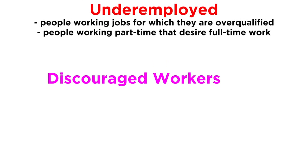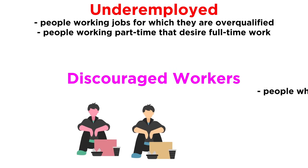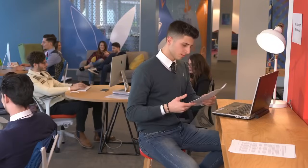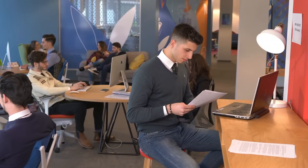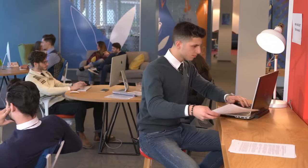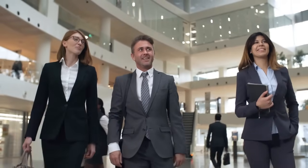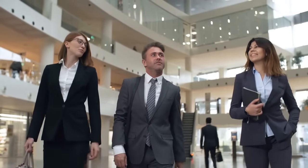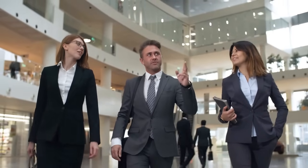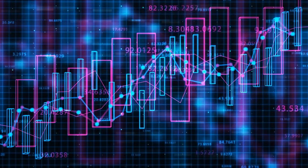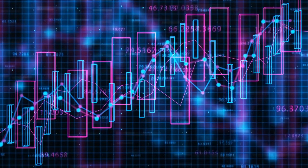They are what economists refer to as underemployed, or working at a job for which they are overqualified, or working part-time when they desire full-time work. There are also discouraged workers who have stopped searching for employment altogether. Due to these situations, the unemployment rate can be misleading. But one thing is certain: economists greatly rely on tracking unemployment, as it is a useful indicator for tracking the status of a nation's economy.